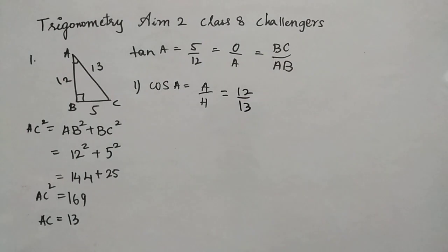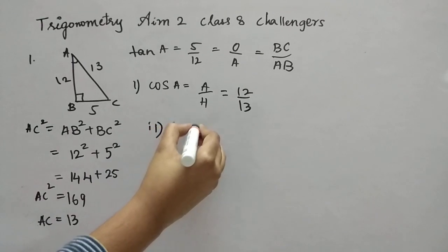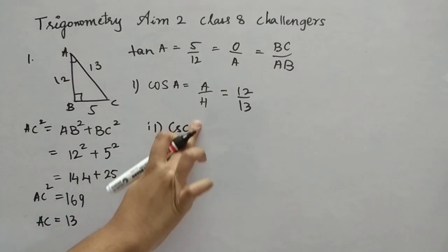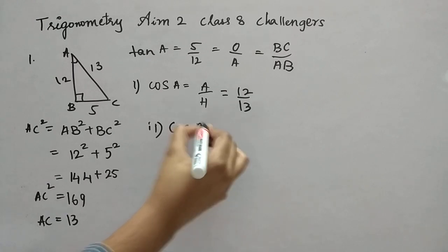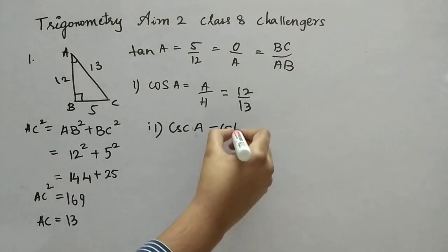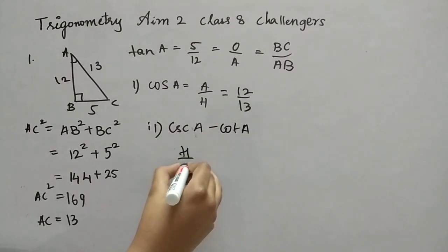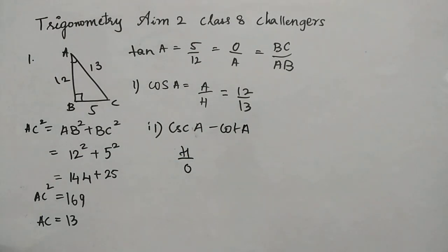Now, second bit also, we will do in the same manner. Cosecant theta. Sorry, it's not theta. It's A, theta is at A, right? So we will put it as A here.